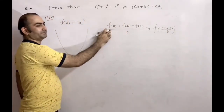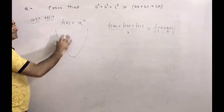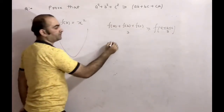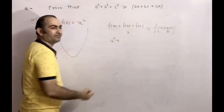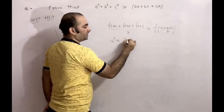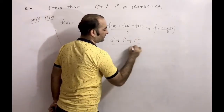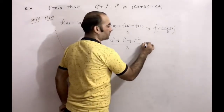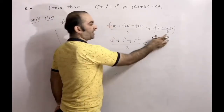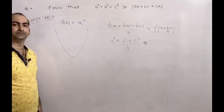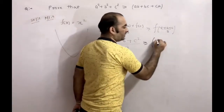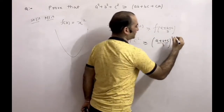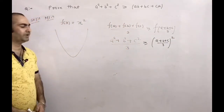Now, f(a) = a², f(b) = b², f(c) = c². So (a² + b² + c²) / 3 is greater than or equal to f[(a + b + c) / 3], which equals [(a + b + c) / 3]².